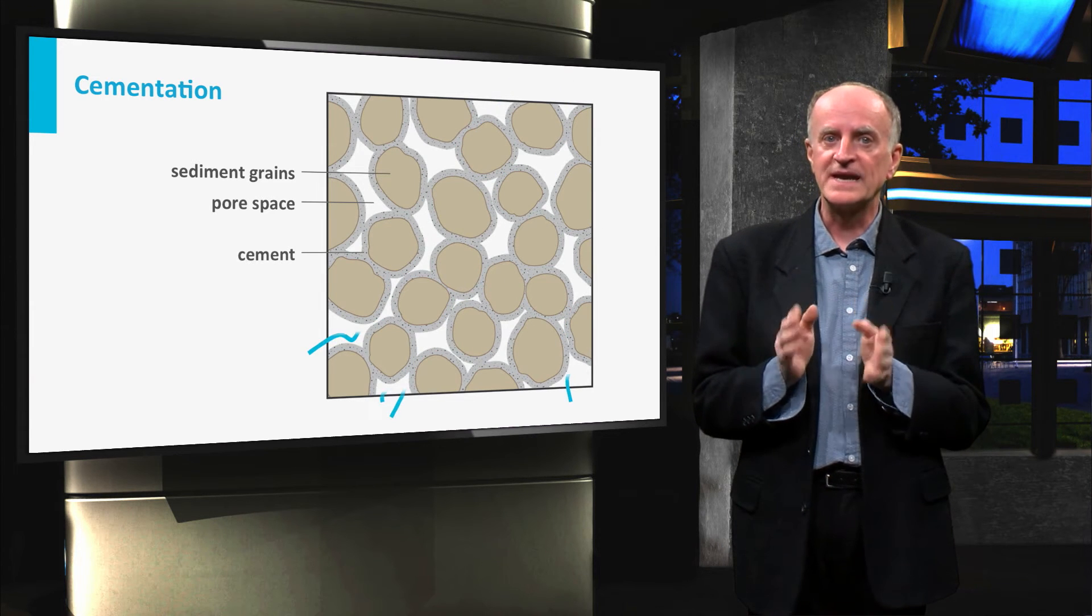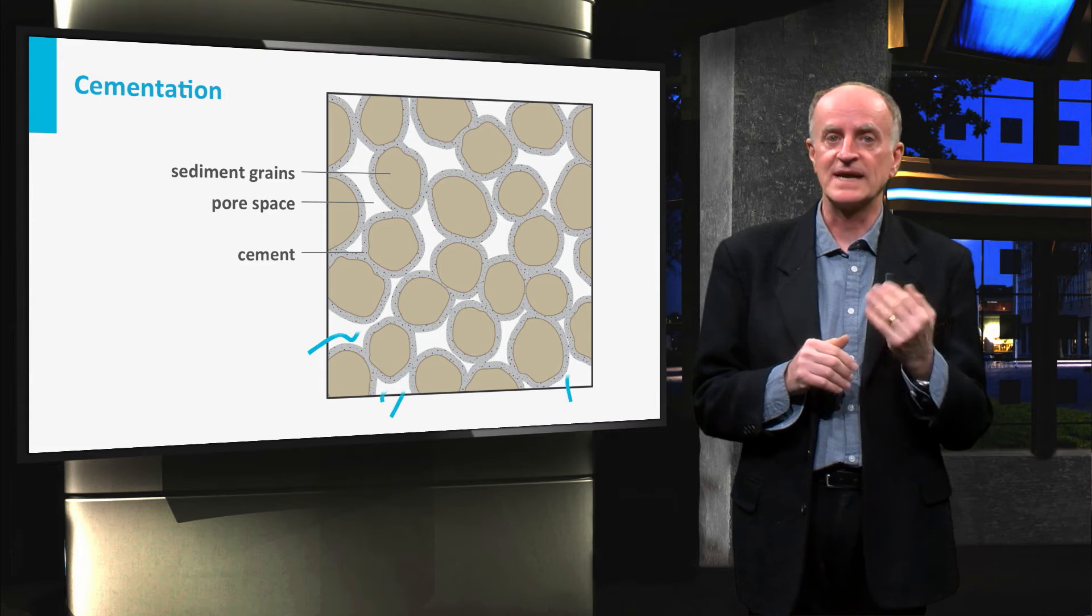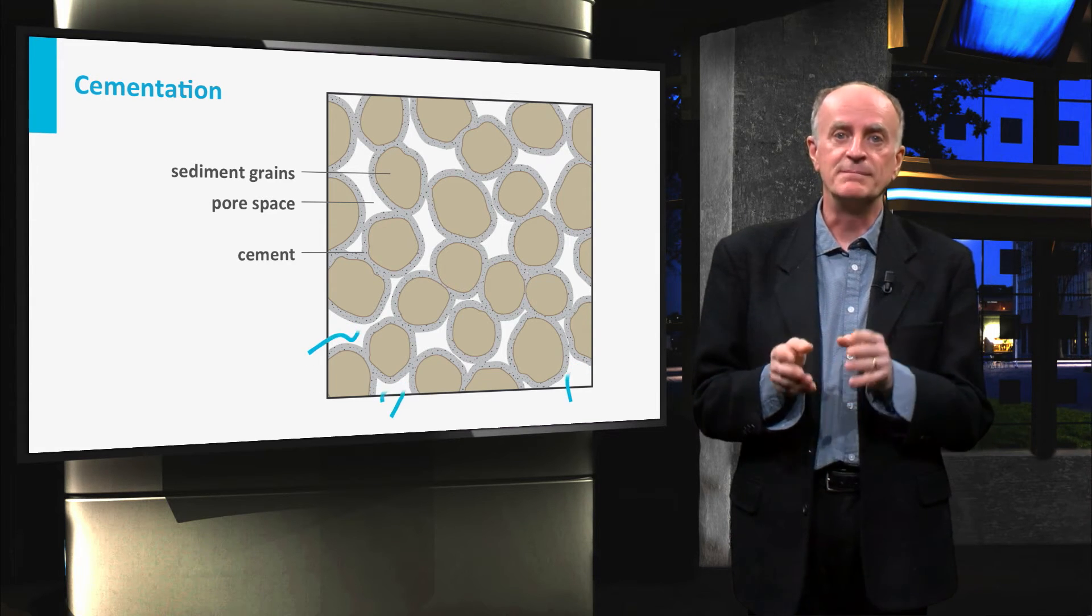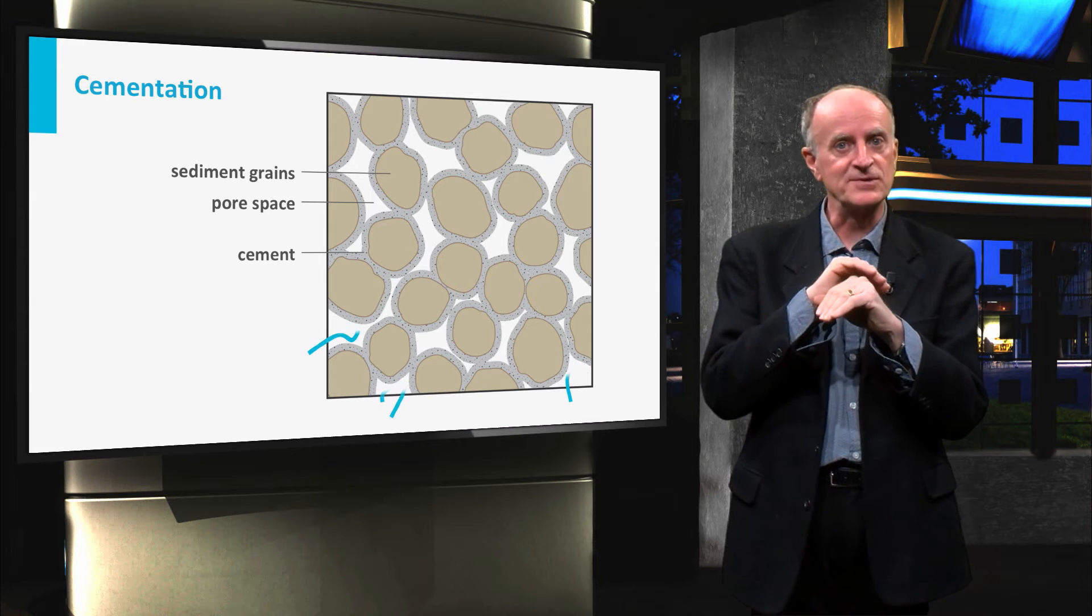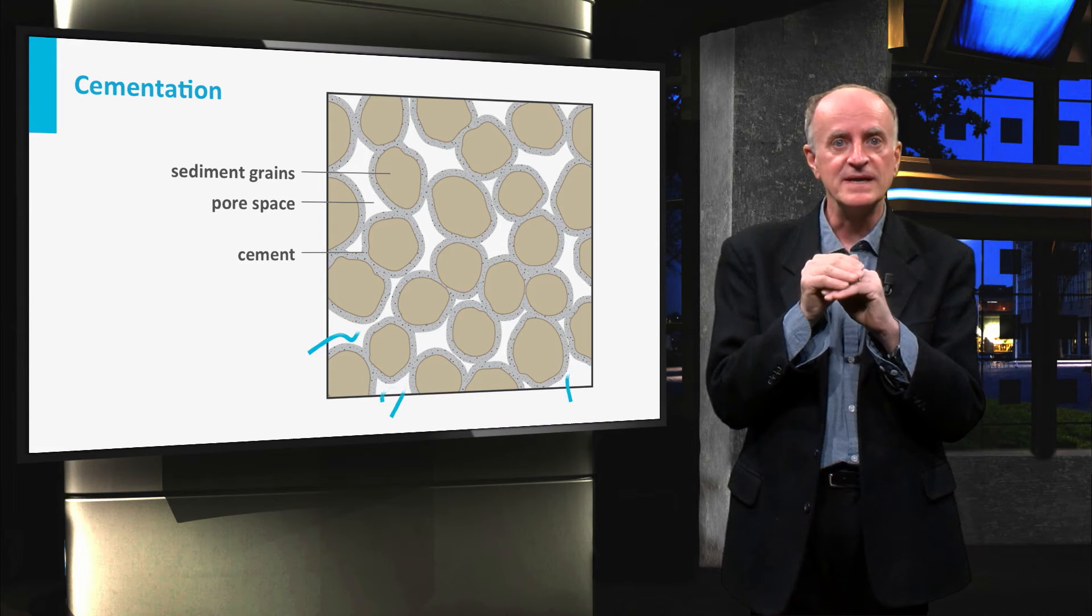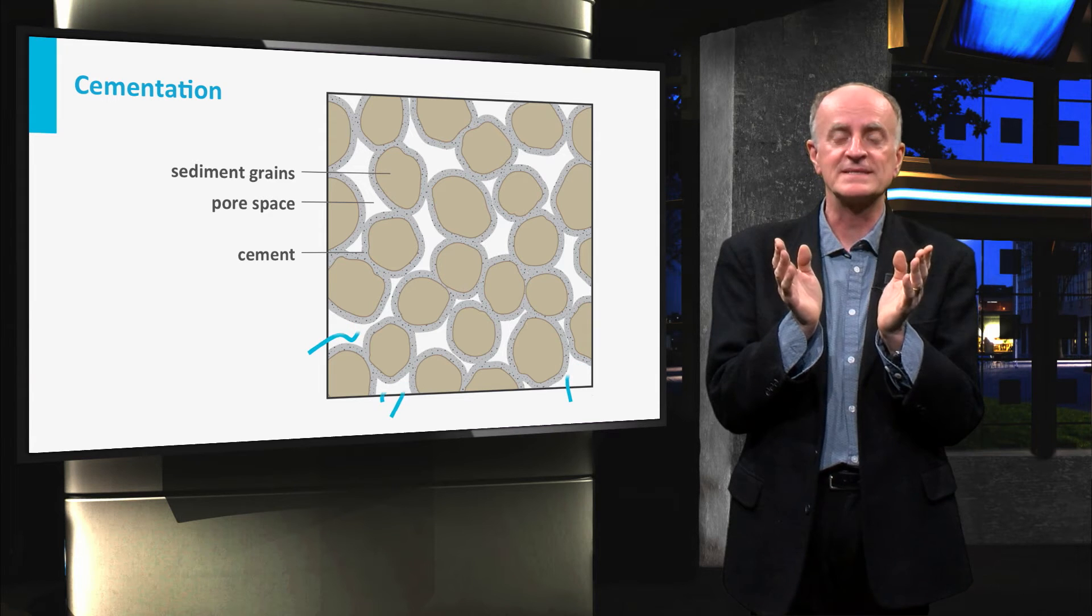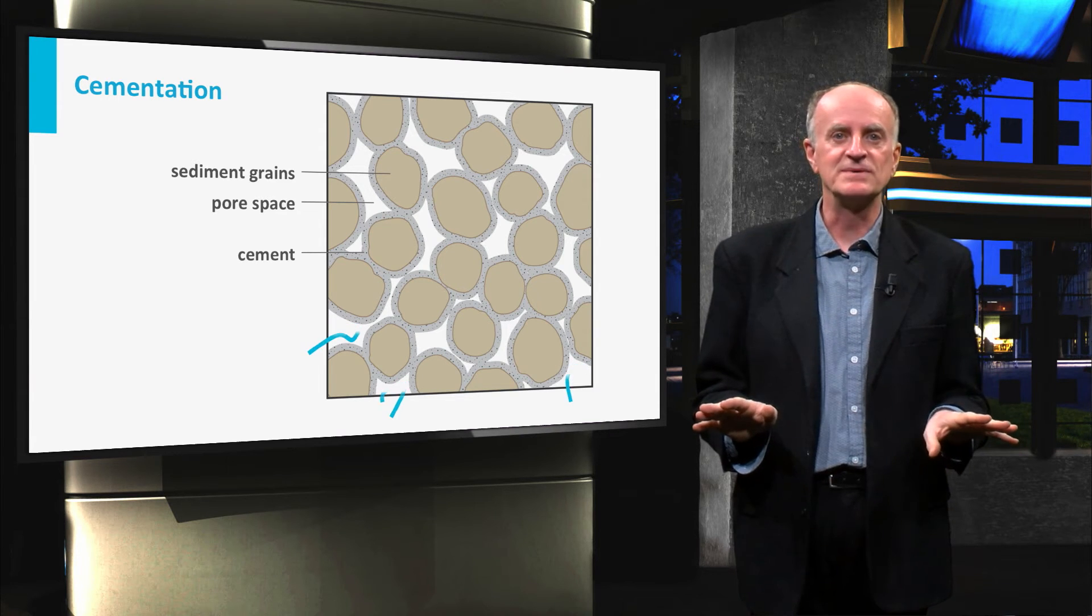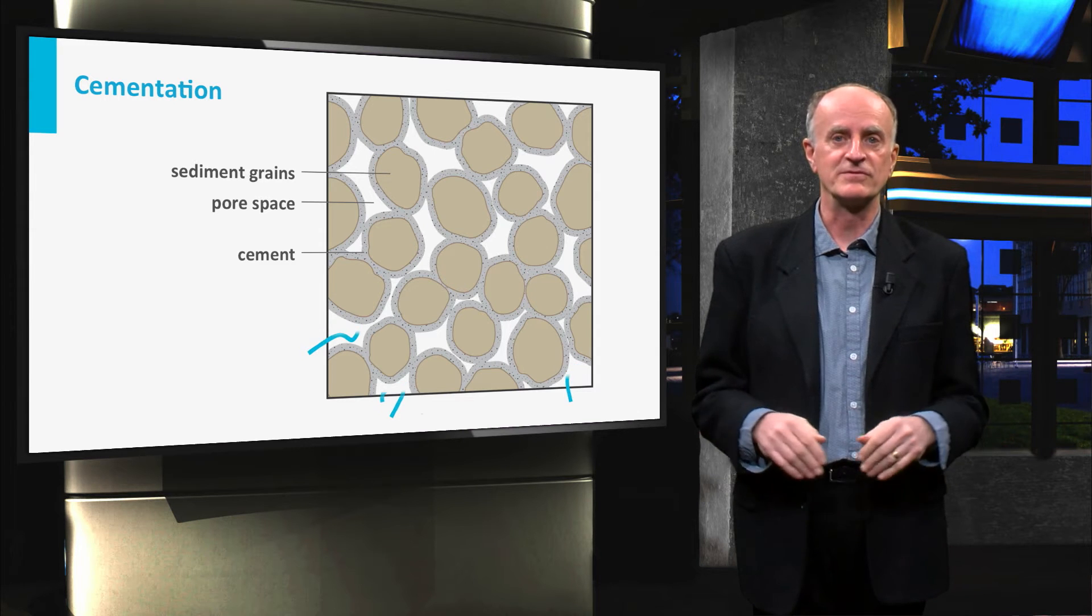Fluids, however, often carry dissolved minerals such as calcite or quartz. If chemical conditions allow it, the minerals will precipitate and start creating a film around grains thereby blocking the passages between the grains. This causes a major decrease in effective porosity and therefore permeability.